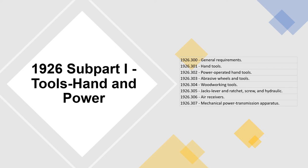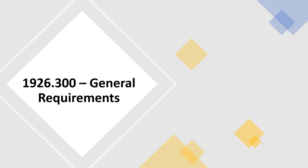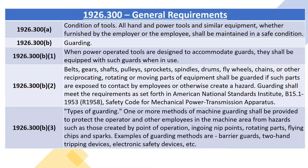OSHA 1926 Subpart I - Tools, Hand and Power. 1926.300 General Requirements. 1926.300(a) Condition of Tools: All hand and power tools and similar equipment, whether furnished by the employer or the employee, shall be maintained in a safe condition. 1926.300(b) Guarding. 1926.300(b)(1): When power operated tools are designed to accommodate guards, they shall be equipped with such guards when in use.